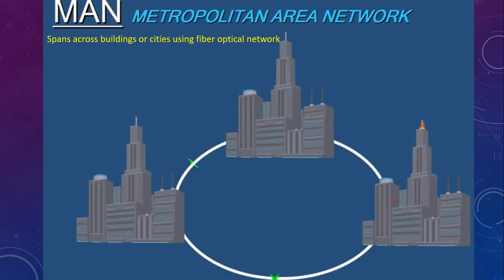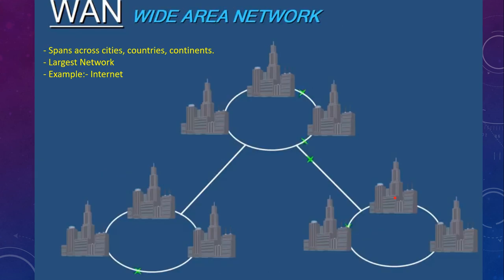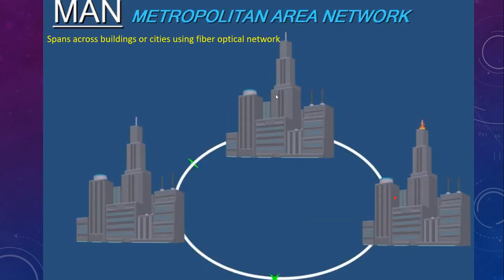The next kind of network is MAN, or Metropolitan Area Network. It spans across buildings or cities, and we use fiber optical networks to connect different networks within it.